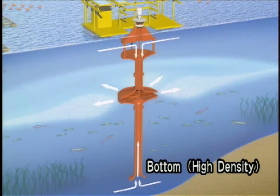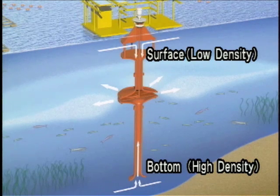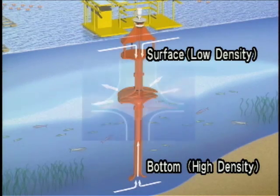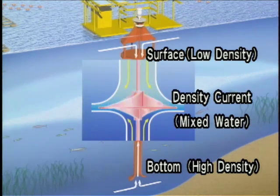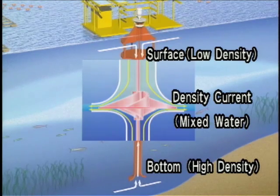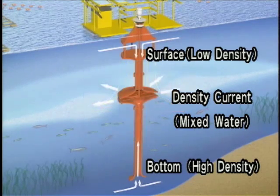This illustrates how the density current generator works. It takes into its pipes heavy water from the bottom and light water from the surface, mixes them, and releases the mixture in the middle. The mixed water in the density current phenomenon spreads outwards, covering a large area under its own power.